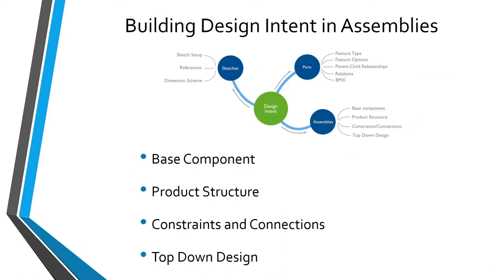In assemblies, there are four different ways of building design intent into your models: first, the choice of your base component; second, how you organize your product structure; third, the constraints and connections that you use; and fourth, top-down design. The important thing is that better choices lead to better models — specifically, assemblies that are parametric, flexible, and robust.